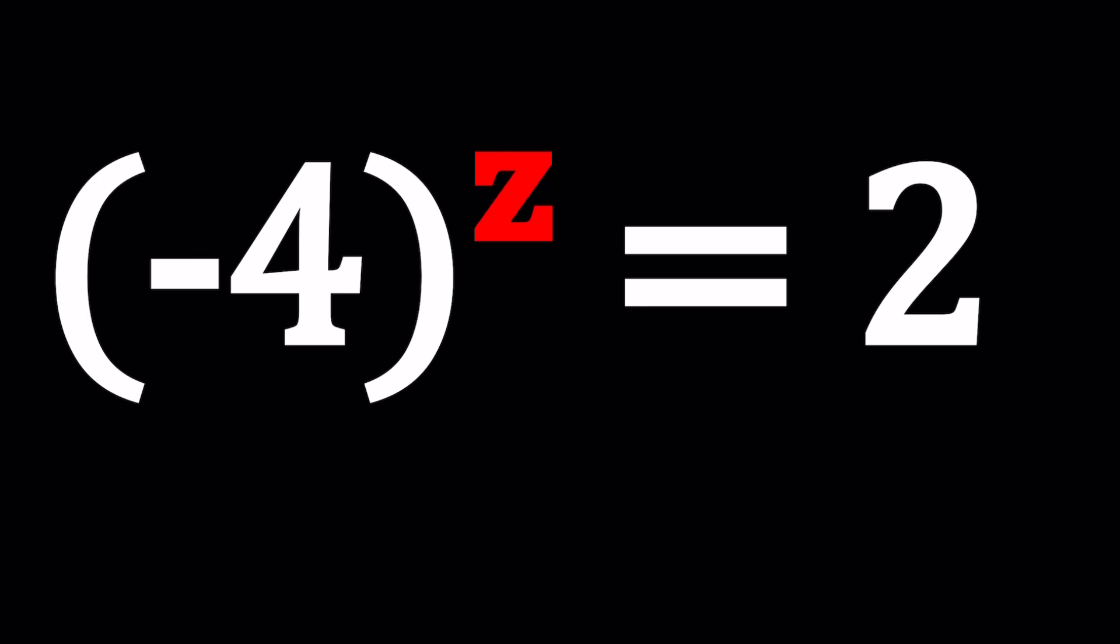If only I had 4 to the power z equals 2, then I could conclude with the following. The square root of 4 is equal to 2, so z is probably 1 half, because 4 to the power 1 half is equal to 2. Can there be another solution?